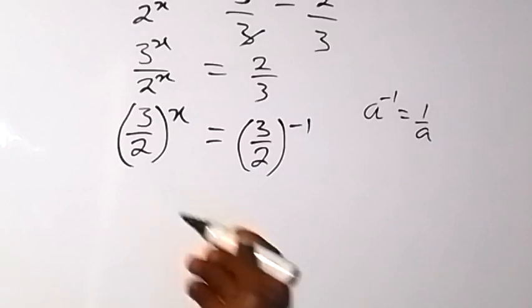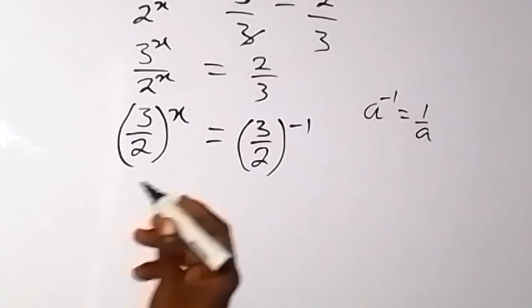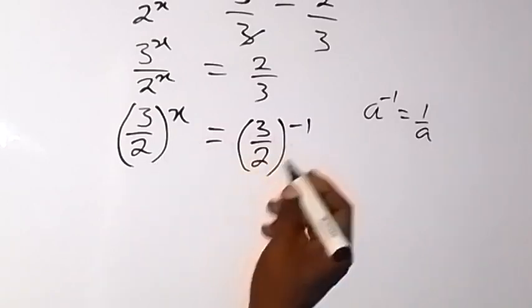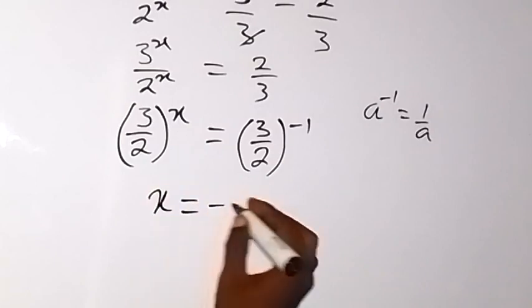We can see that we have same base, that is 3 over 2 and 3 over 2. Therefore we can equal the power and x is therefore minus 1.